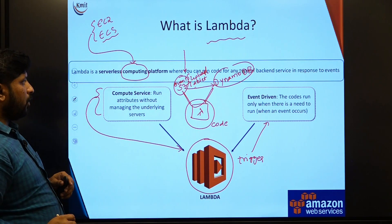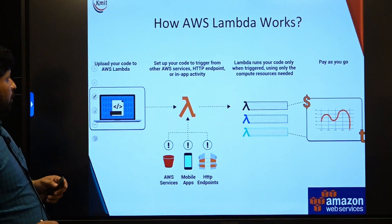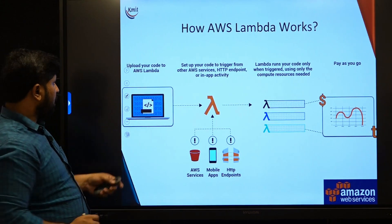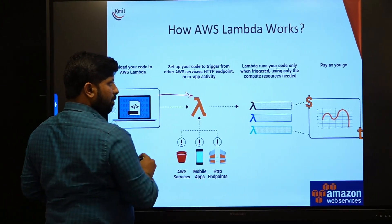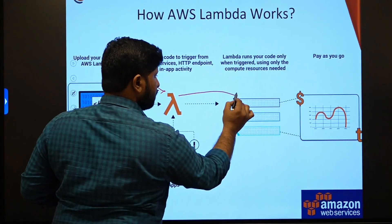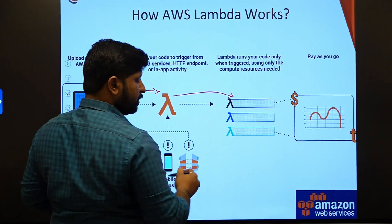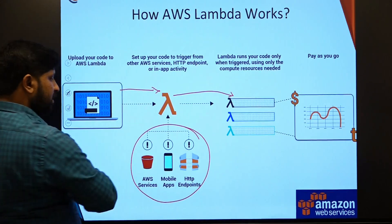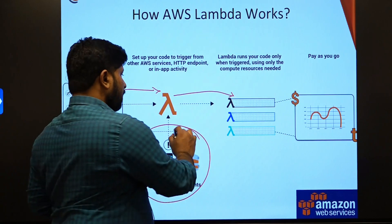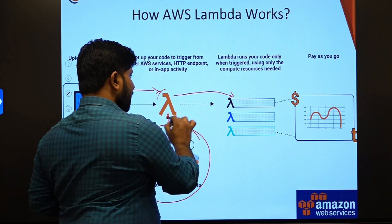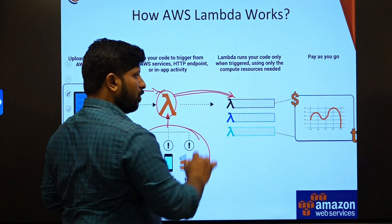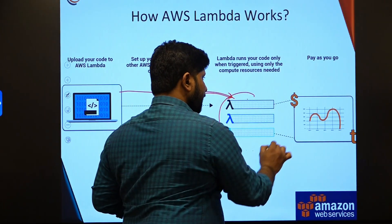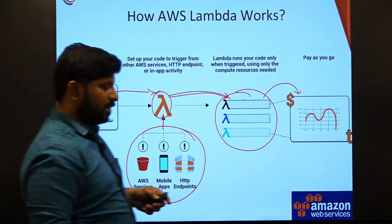This is the working style. Your code needs to be uploaded onto your Lambda functions, and Lambda processes or executes the code whenever a particular trigger happens from any services, mobile apps, or endpoints. Whenever there is a trigger, this Lambda function will execute the code you write. And only when it is executing will it charge you.